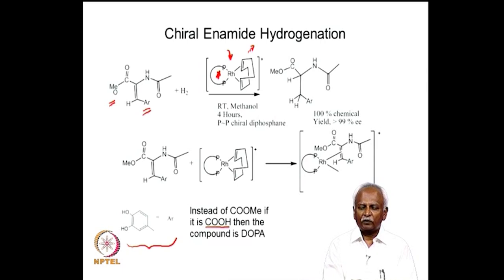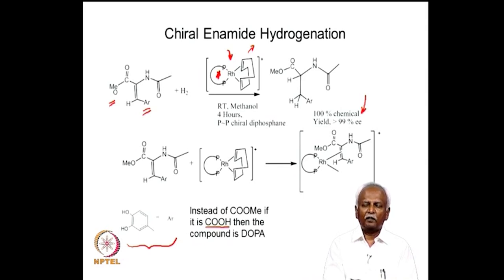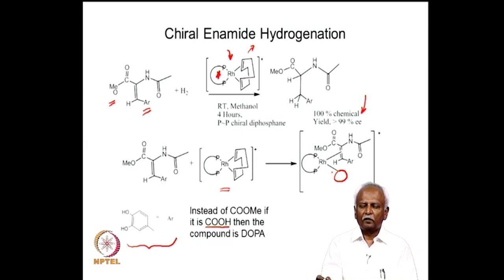This reaction could be carried out with 100 percent chemical yield — the hydrogenation at extremely mild conditions with very high enantiomeric excess, close to 99 percent — meaning you have a practically pure drug at the end of the hydrogenation, and that too in the chiral form. How exactly does this reaction work? The 1,5-cyclooctadiene readily leaves the coordination sphere of the metal, generating a vacant coordination site where the alkene moiety is linked to the rhodium.